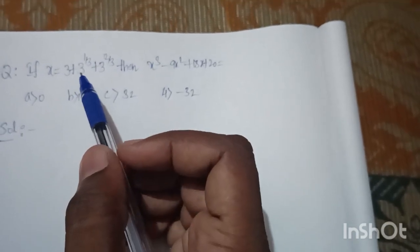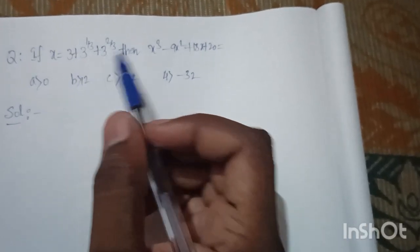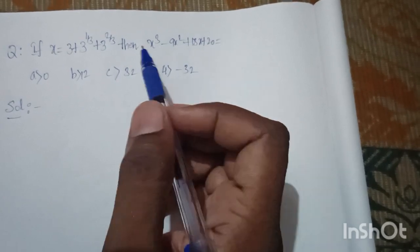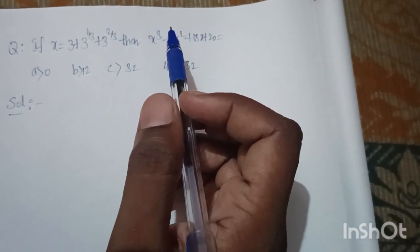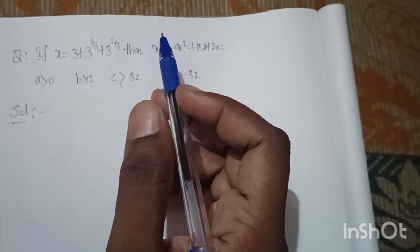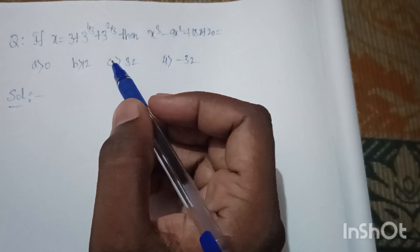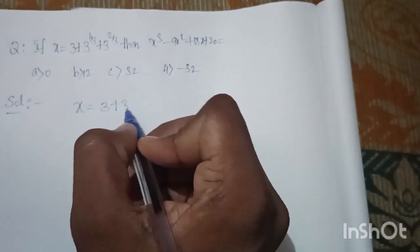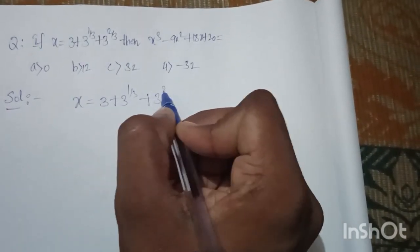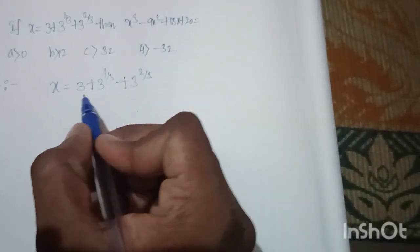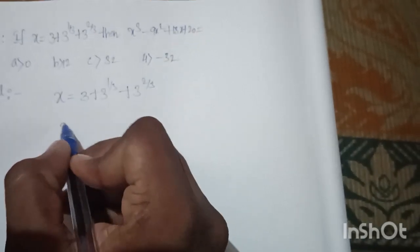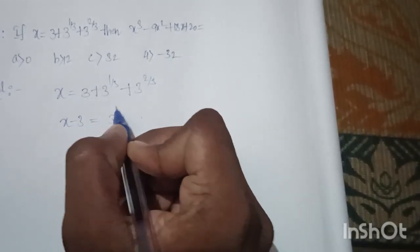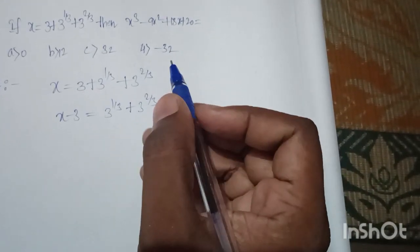This problem is related to surds. I took a lot of time substituting the x value and doing calculations unnecessarily without using a smart logical way. Now we'll see how to solve it very easily. We have x = 3 + 3^(1/3) + 3^(2/3). I'm bringing 3 to the LHS so it becomes x - 3 = 3^(1/3) + 3^(2/3).